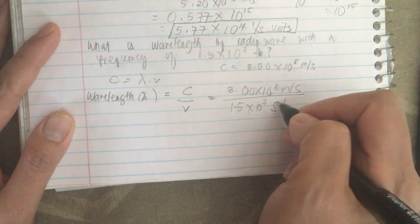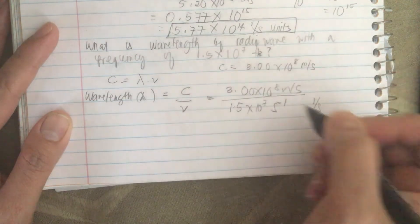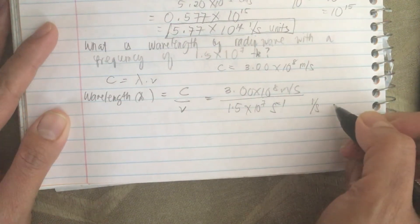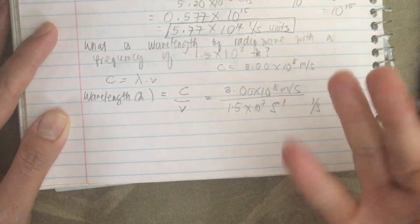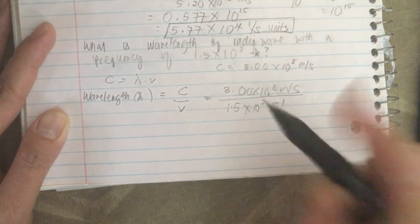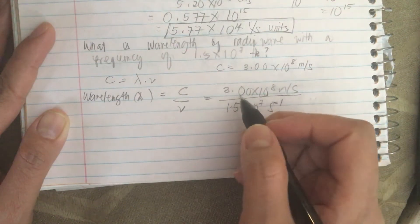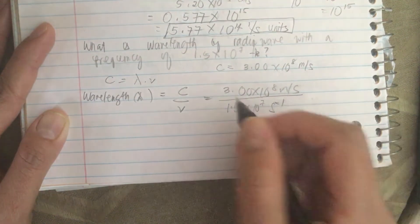1 over s is the same as s to the negative 1, so 3 over 1.5.